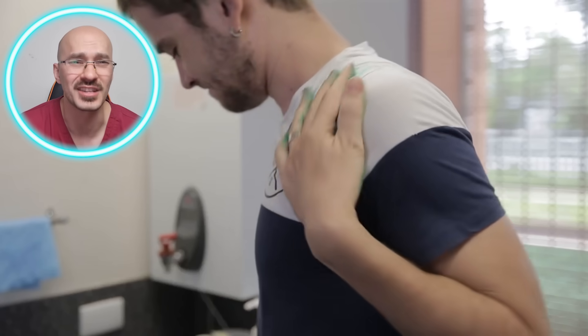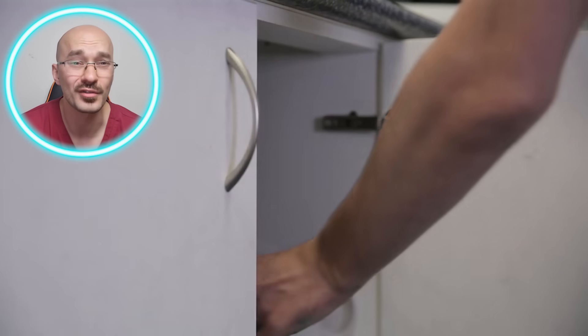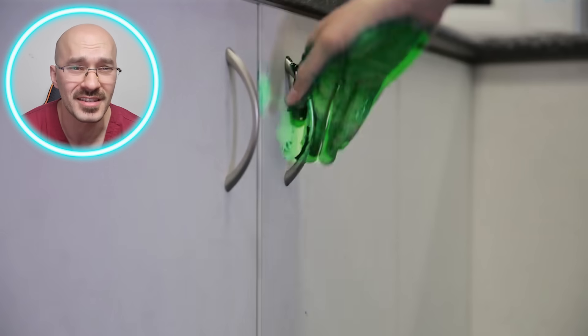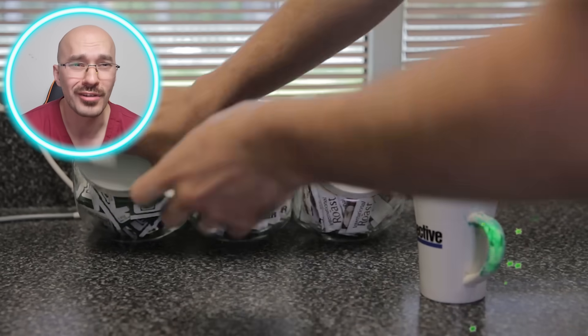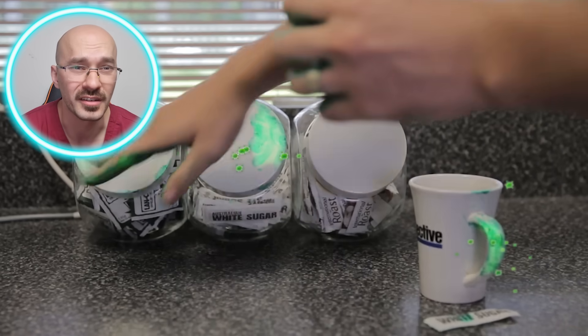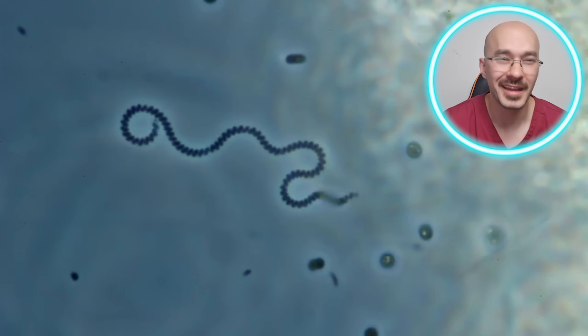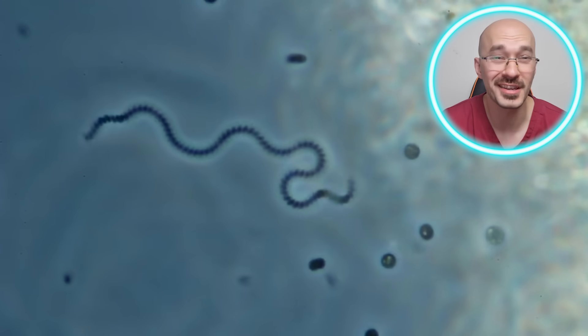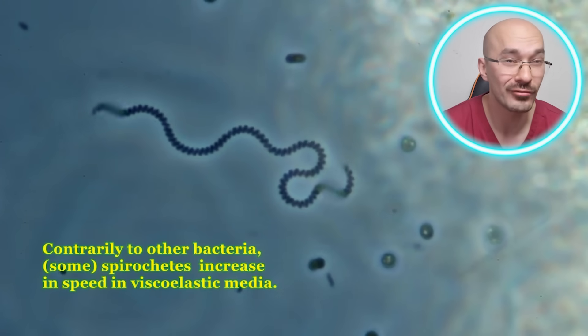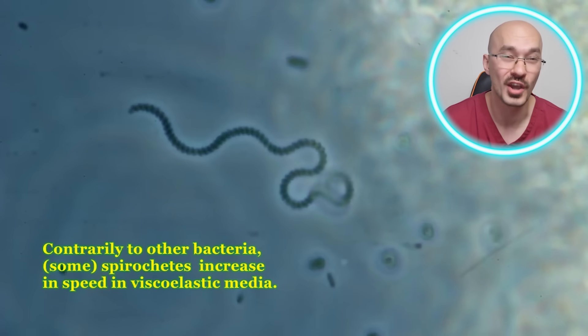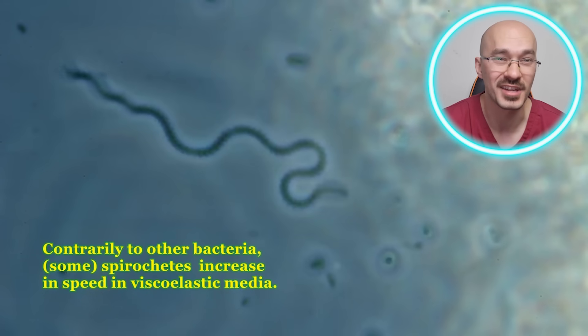Unlike other bacteria such as E. coli that can survive on surfaces for several days, T. pallidum can't, and can only really survive in the human body, which ultimately means that humans are the main cause for this bacteria being able to stick around for the last 500 years. Appreciating the fragile properties of T. pallidum as a bacteria, we can understand that it can't really be spread by air droplets or just by regular close contact.